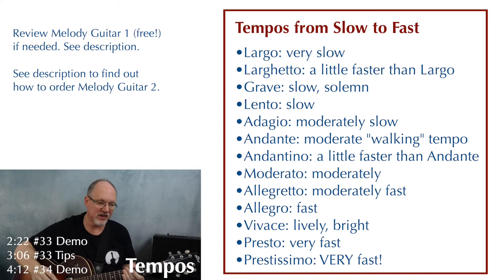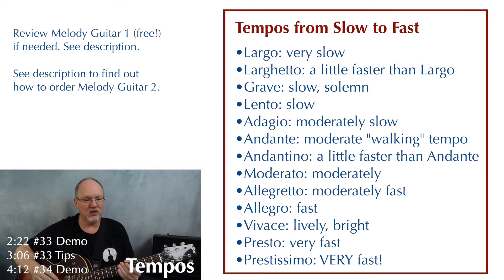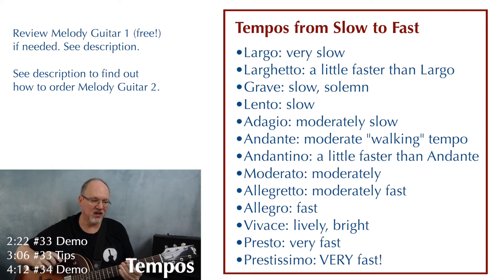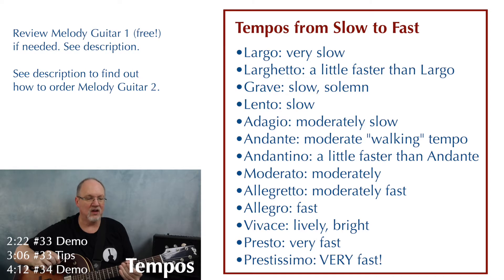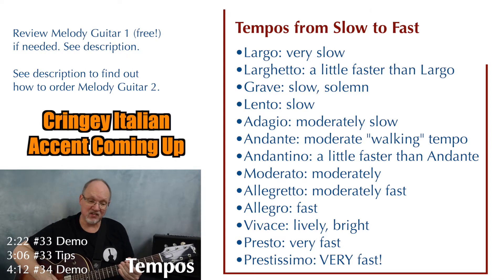Going through the terms from slowest to fastest, we have: Largo, Larghetto, Grave, Lento, Adagio, Andante, Andantino, Moderato, Allegretto, Allegro, Vivace, Presto, and Prestissimo.